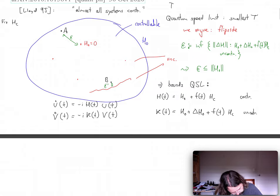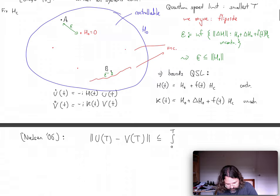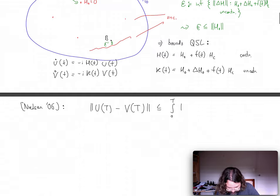And there's a fairly old bound by Nielsen, which is very easy to show, which basically says that if I compare now the time evolution operator at some fixed time capital T of the controllable system and the uncontrollable system, I can bound this by the integral over the distance of the two Hamiltonians.